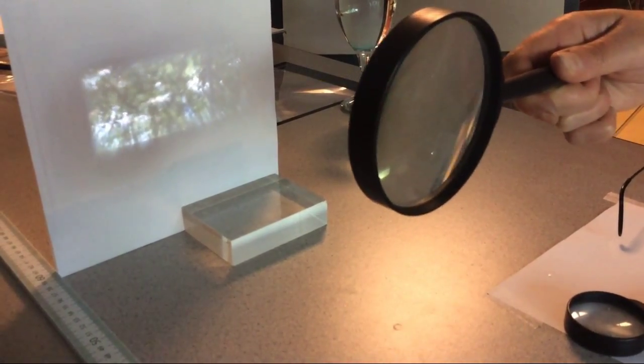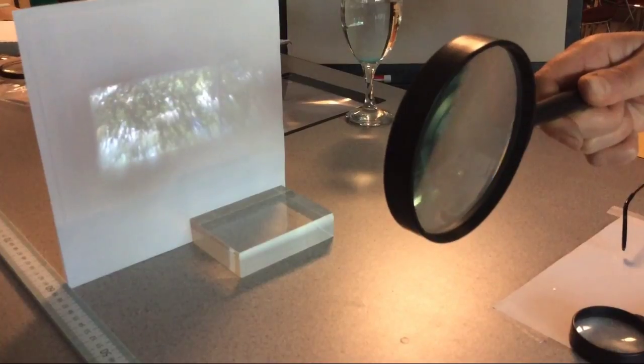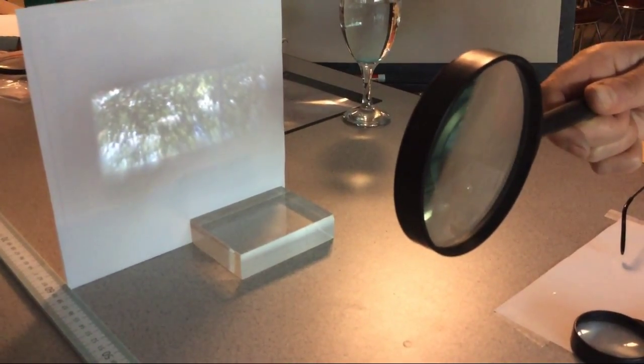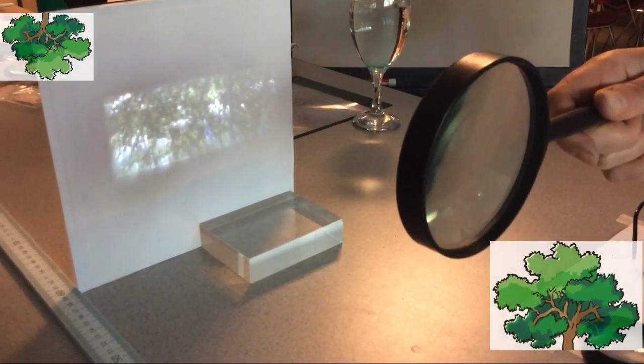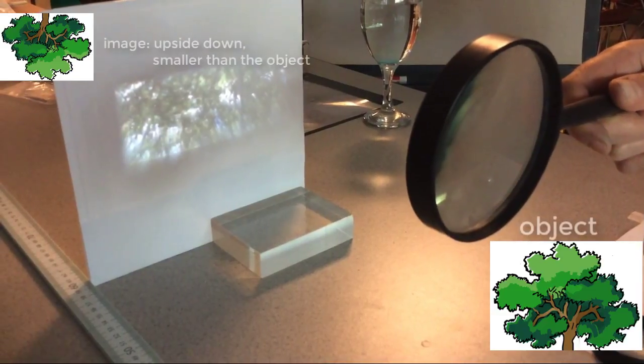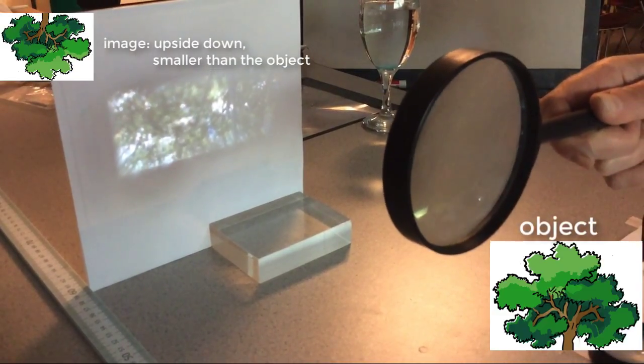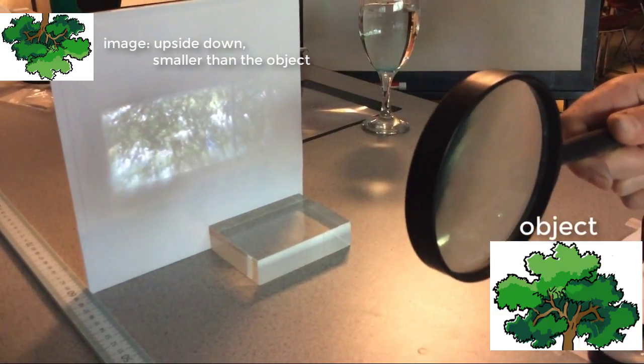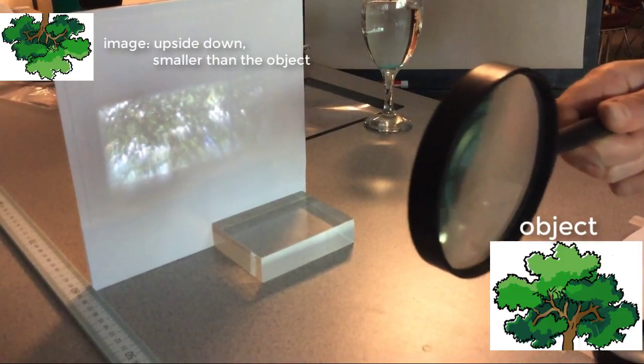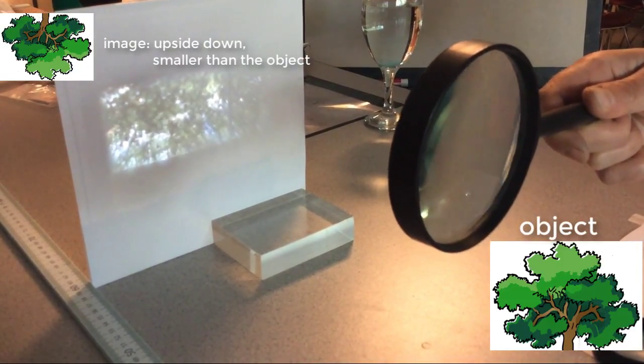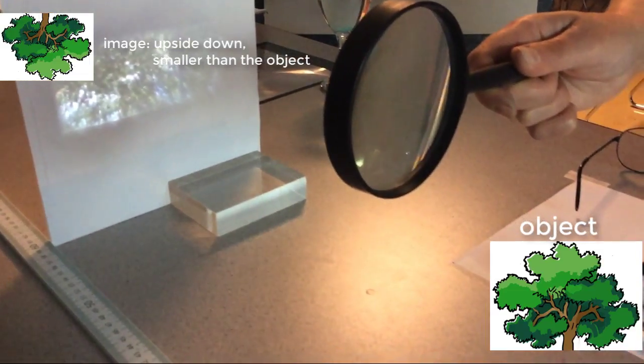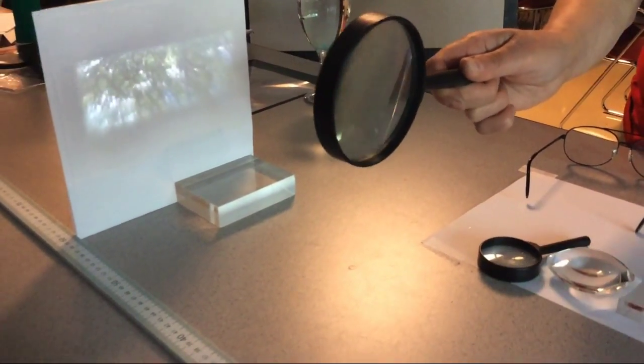If you were, when you were doing it, ask the children to look more carefully so they can see that the trees are upside down. This image is a real image because the rays of light converge on the screen and the image is upside down, we call it inverted image, and it is reduced. It's smaller than the object.